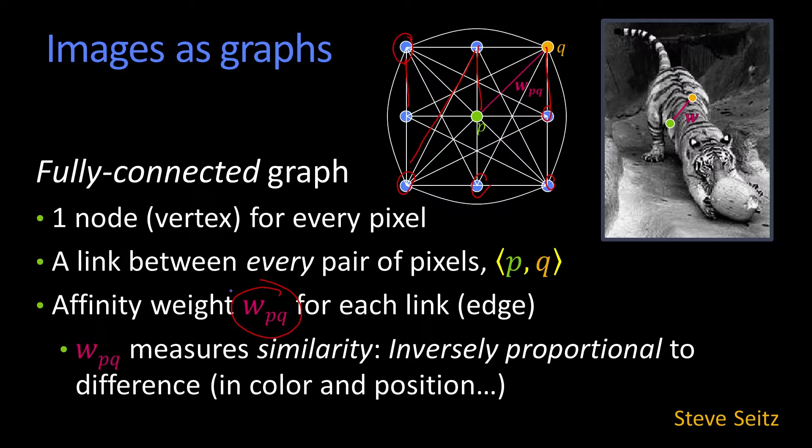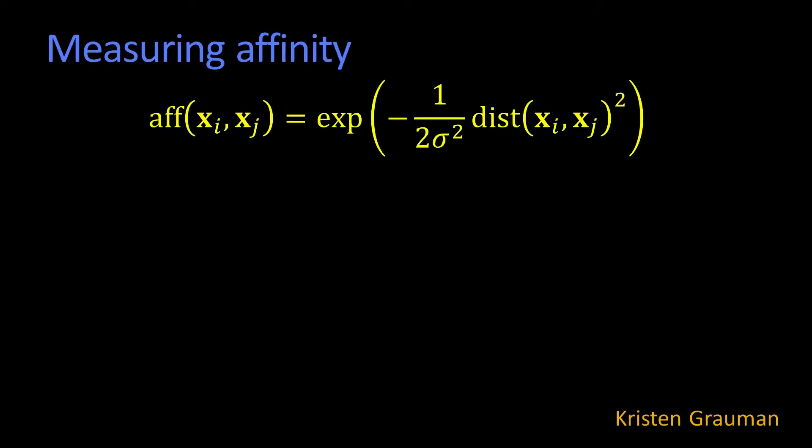So I'm going to build a weight matrix using this affinity. So a standard affinity, for example, might be that I'm just going to use a Gaussian, where I say the affinity between two pixels, i and j, is just this exponentiation. As a function, it's just this exponentiation as a function of the distance.